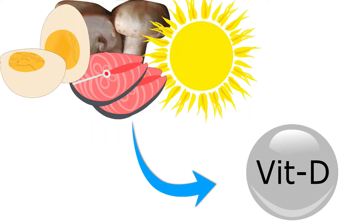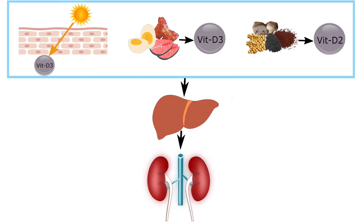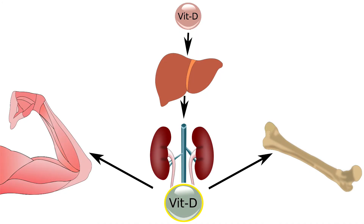Interestingly, vitamin D obtained from all these sources is inactive. To become active, it has to undergo two processes. The first process of activation is in the liver and the second is in the kidney. The active form of vitamin D, also known as calcitriol, is formed in the kidney.